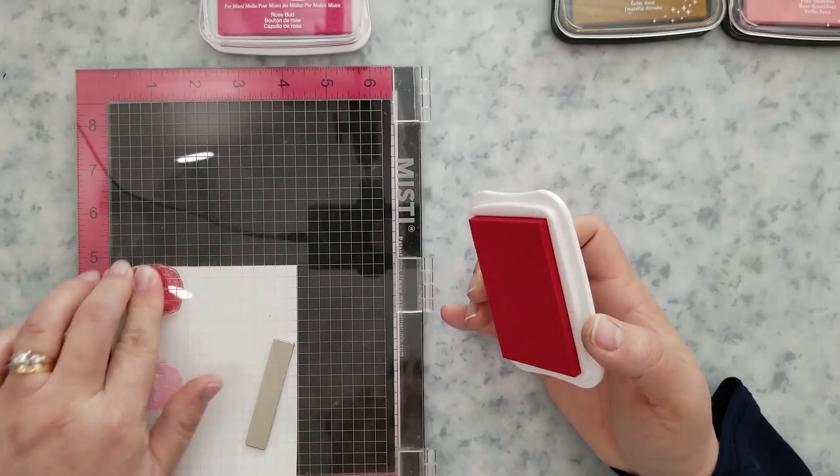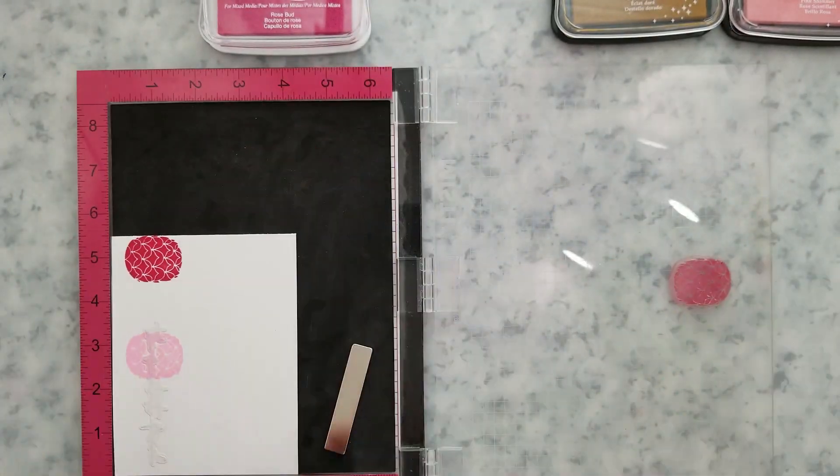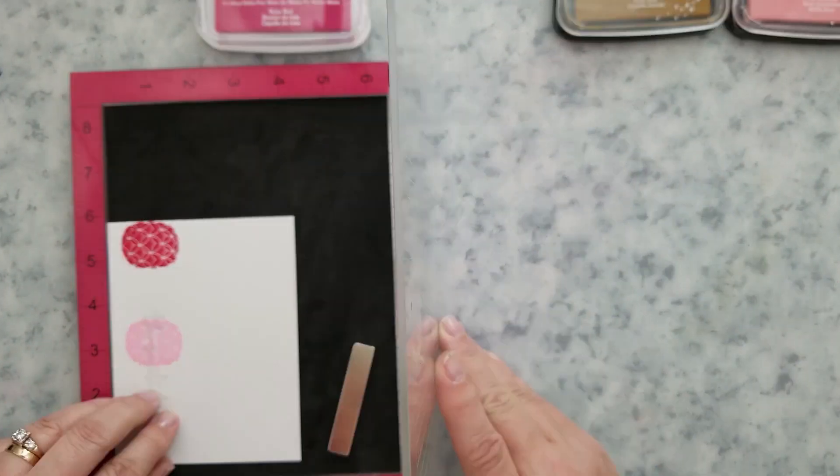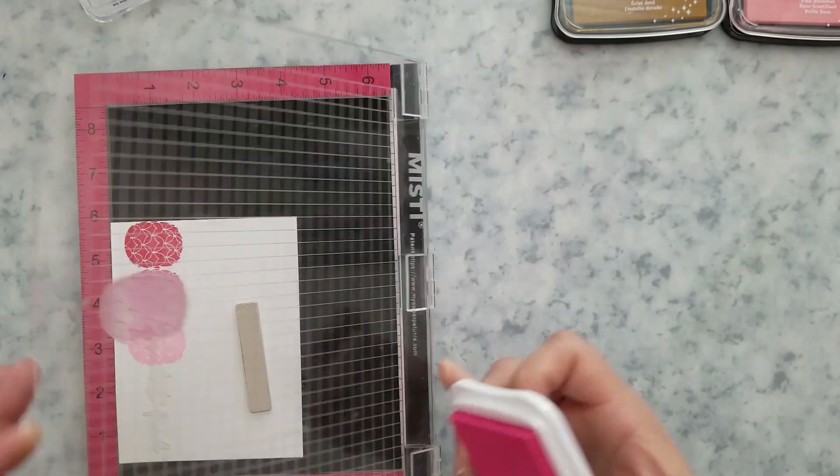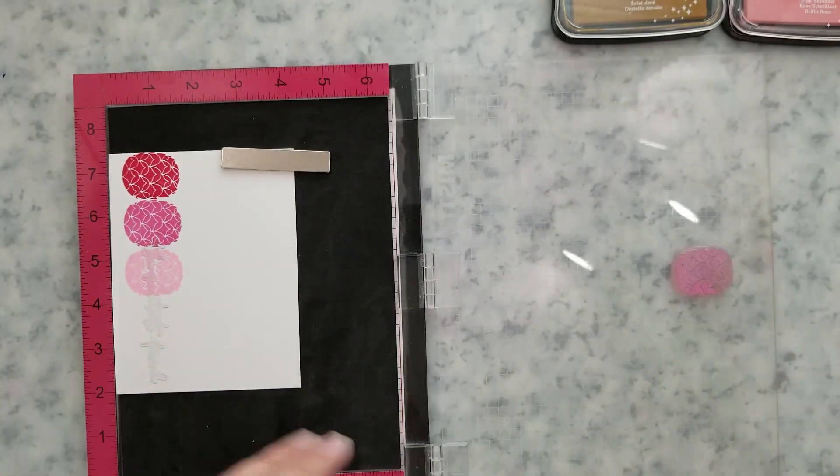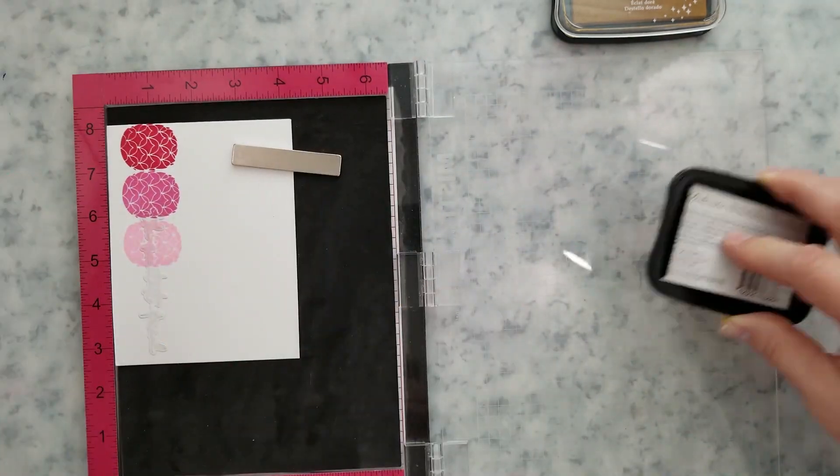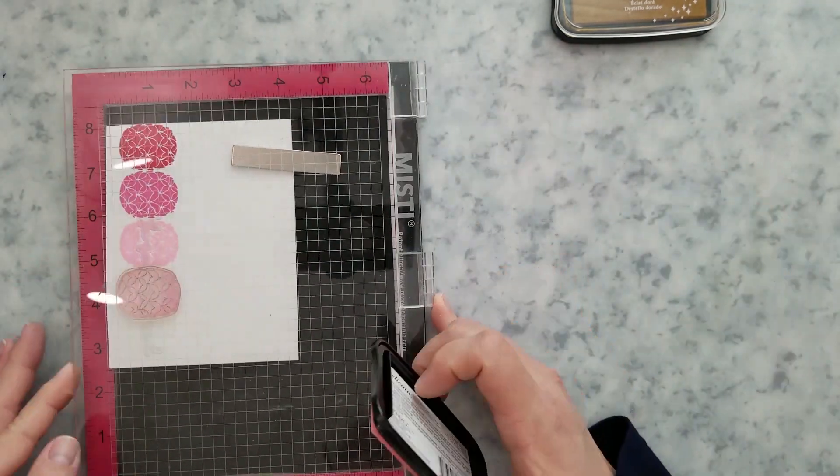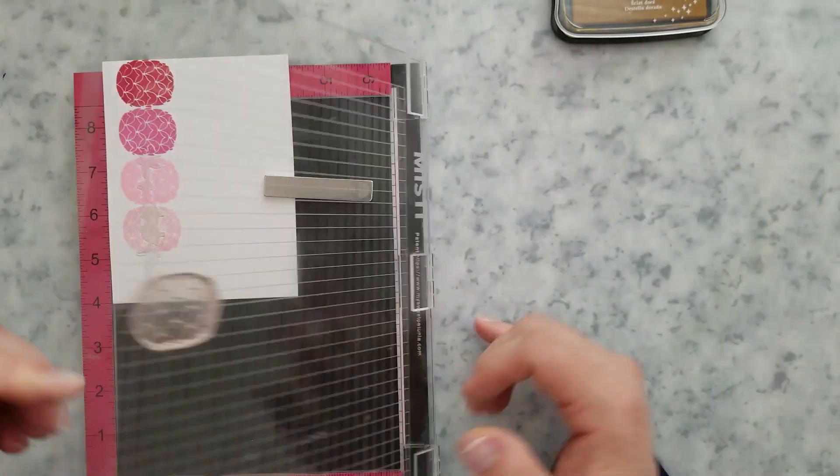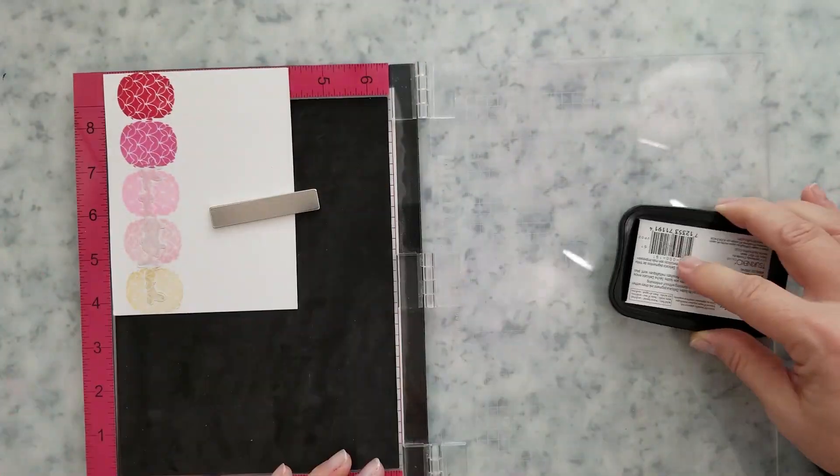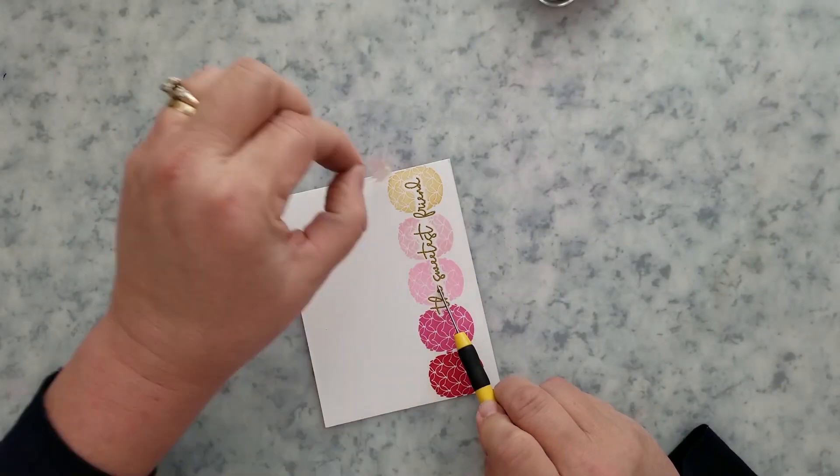Now on this card I wanted to do an ombre with reds and pinks, and then I'm going to finish it off with a gold pineapple on the end. So I'm using Memento Luxe inks in the colors Love Letter, Rosebud, and Angel Pink, and then I'm going to come in with Pink Shimmer and Golden Glitz inks there on the end.